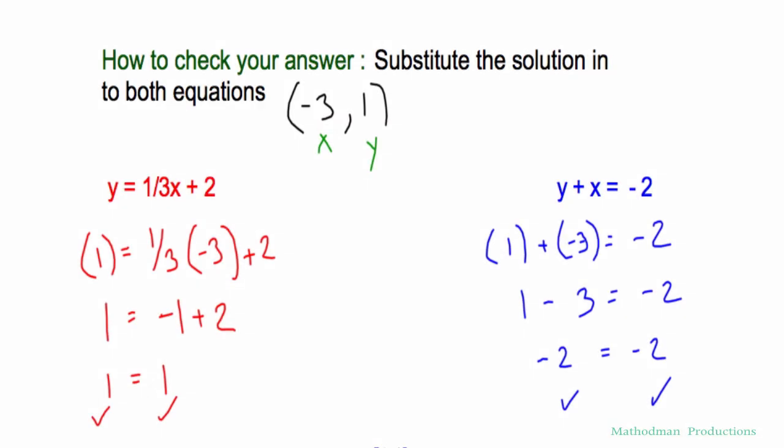How do you know if your answer is correct? What you have to do is substitute the solution into both equations. So my solution, the intersection point, is negative three and one.